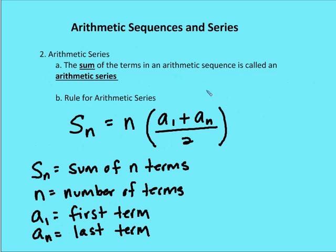All right, now the formula for an arithmetic series is going to be the sum of n terms is equal to the number of terms, n, times the first term plus the last term over 2.